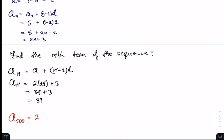But with the formula we could just say this is 2 times 500 plus 3, and this would give us 1000 plus 3, which is equal to 1003.